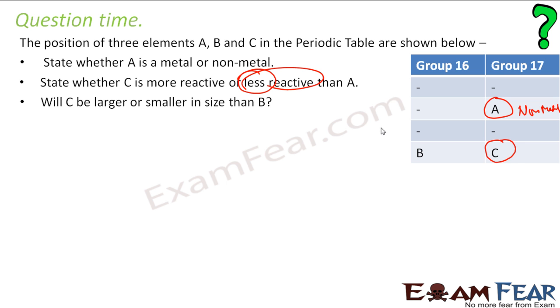Will C be larger or smaller than B? Compare C and B. C has to be smaller because the number of shells are same, but if you go from here to here the proton becomes powerful as compared to B. And then it will attract electrons more if you compare to B and thus the size will decrease. So you can see that C is smaller than B.